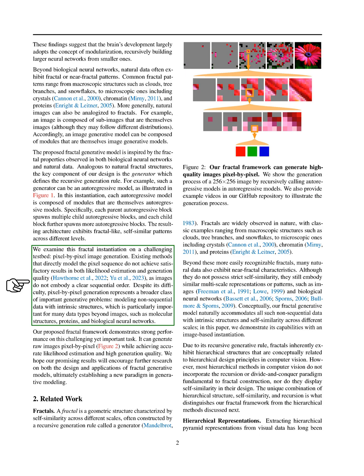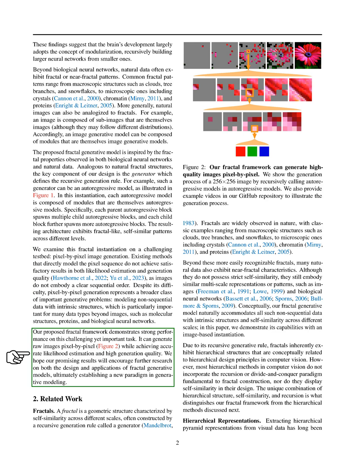We test this fractal model on a challenging task: generating images pixel-by-pixel. Current methods that model pixel sequences often struggle with likelihood estimation and generation quality since images lack a clear sequential order. However, pixel-by-pixel generation is important for various data types, including molecular structures and biological networks. Our fractal framework shows strong performance, generating images pixel-by-pixel while achieving accurate likelihood estimation and high quality. We hope our results will inspire further research into fractal generative models, paving the way for new advancements in generative modeling.